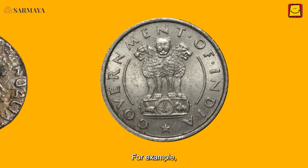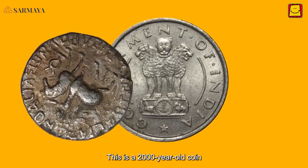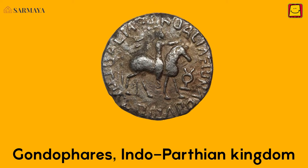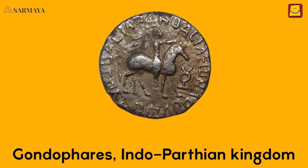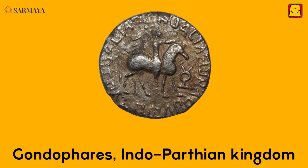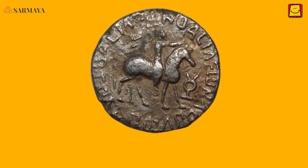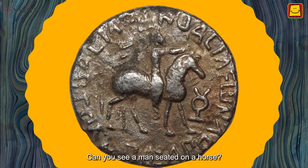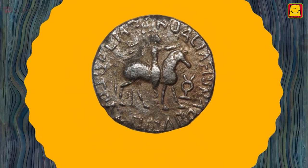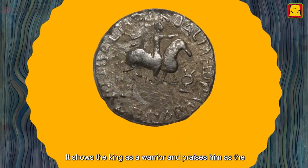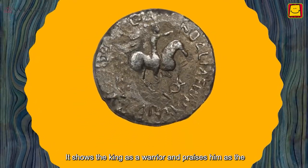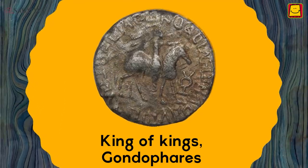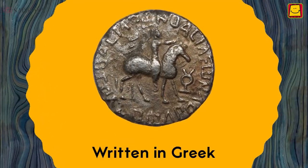For example, this is a 2,000 year old coin issued by Gondafers, king of the Indo-Parthian kingdom in the northwestern region of India. Look closely — can you see a man seated on a horse? It shows the king as a warrior and praises him as the king of kings. The writing around the image describes Gondafers.